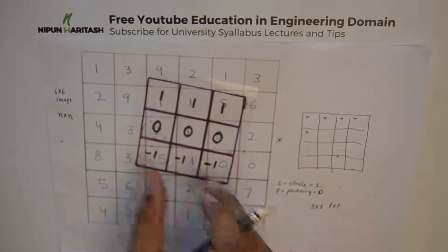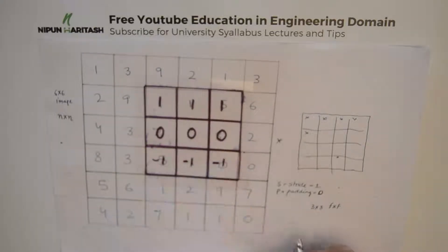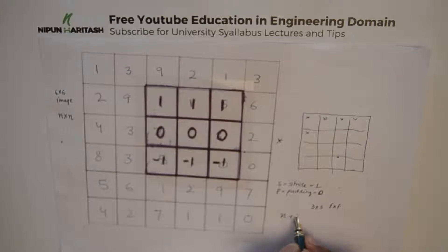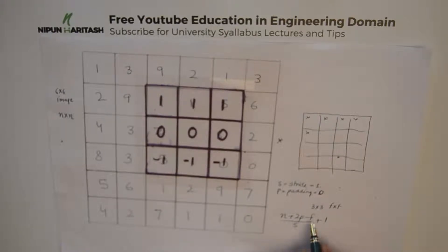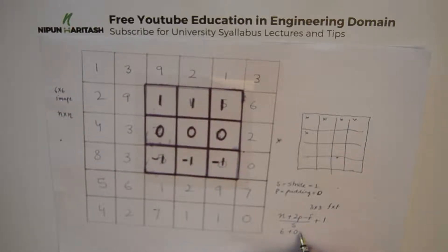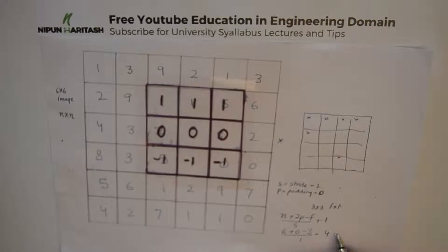Now a very important formula: the output size is given by (n + 2p − f) / s + 1, where n is the size of the image, p is the padding, f is the size of the filter, and s is the stride. Putting in our values: (6 + 0 − 3) / 1 + 1 gives us 4, which is why the output is a four by four image.